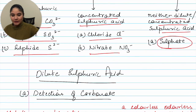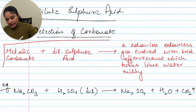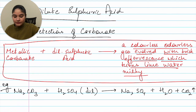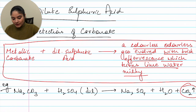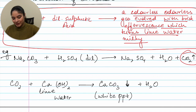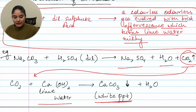The first is detection of carbonate. If you have a metallic carbonate and you react it with dilute sulfuric acid, a colorless odorless gas is evolved with brisk effervescence, which turns lime water milky. This gas is carbon dioxide, CO₂. For example, sodium carbonate reacting with dilute H₂SO₄ gives Na₂SO₄, water, and CO₂. This carbon dioxide reacts with lime water giving a white precipitate of CaCO₃, which turns lime water milky.